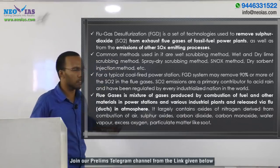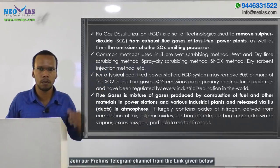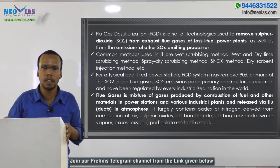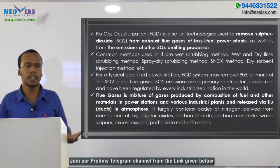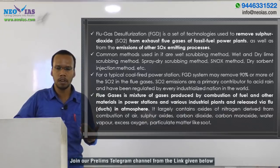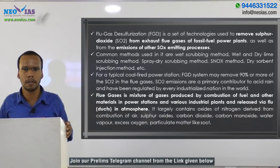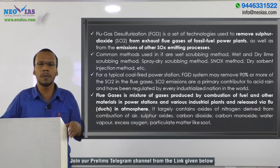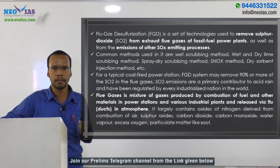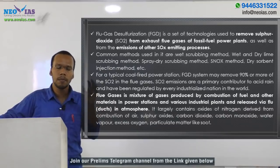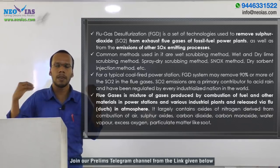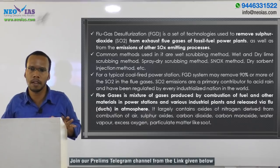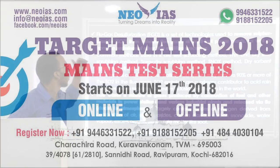FGD is also used for emissions from other SOx-emitting processes. Fossil fuel power plants are power plants using fossil fuel as a source of energy. Other industries — such as manufacturing companies — also use fossil fuels for energy. Whenever fossil fuels are burnt in any of these industries, sulfur is emitted, and those industries utilize technologies to remove sulfur dioxide from their flue gases — that is flue gas desulfurization.